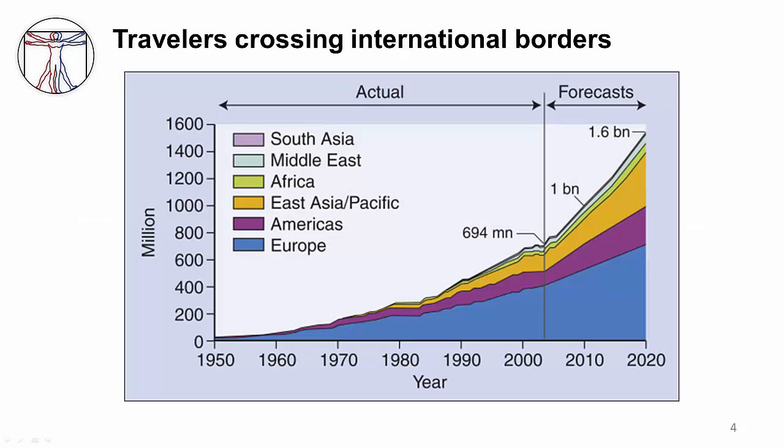As you can see from this figure, there has been a near exponential increase in travelers crossing international borders over the last several decades. This figure also has a projection up until 2020 showing a very high rate of growth in international travel. What this means to the physician is that you're either going to be asked to help prepare a patient to travel to a developing country, or you'll be more likely to see an ill-returning traveler from a developing country in the years to come.